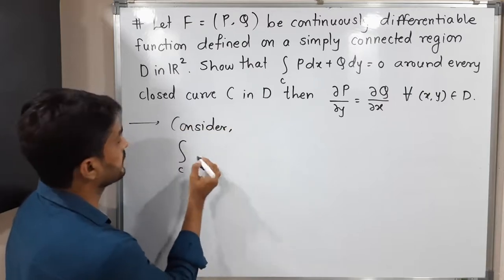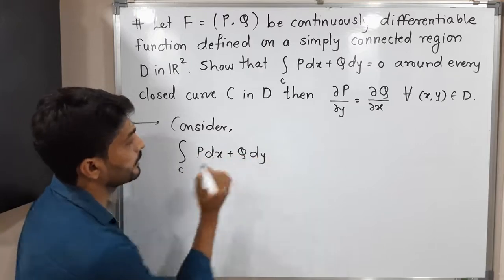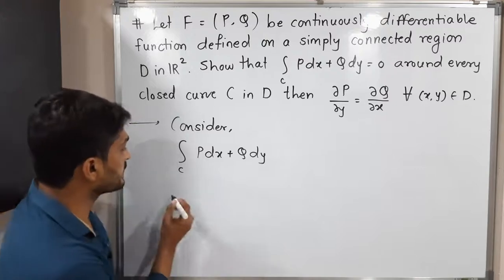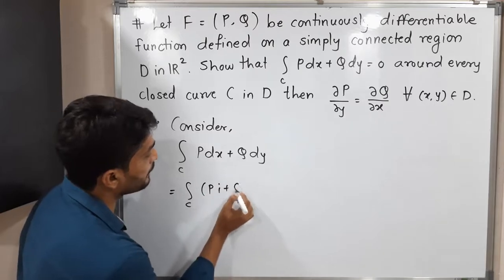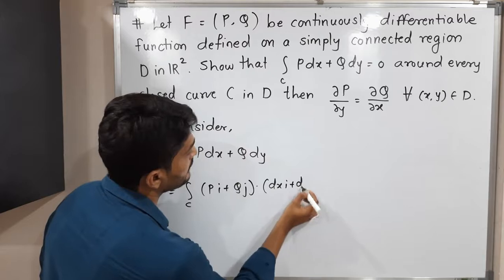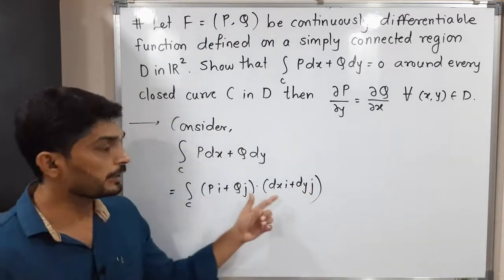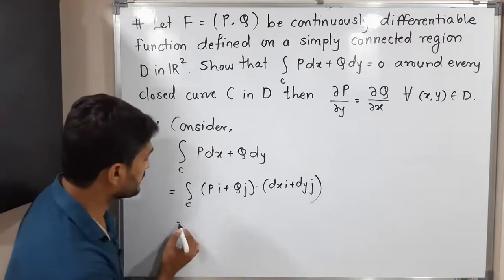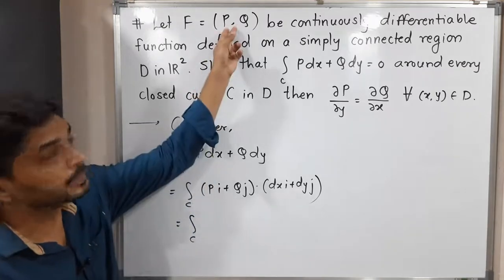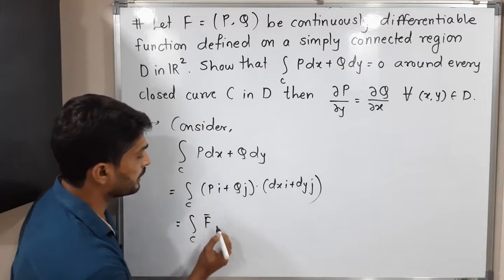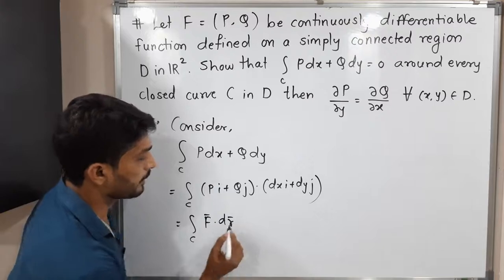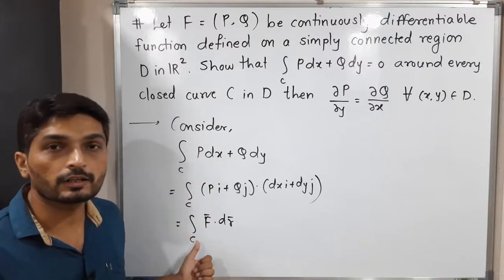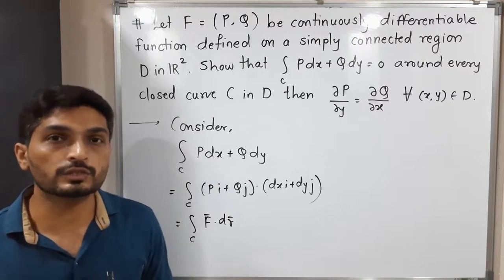Consider the line integral over C: P dx plus Q dy, given to us with value 0. We can express this integral differently — as the integral over C of (P i + Q j) dot (dx i + dy j), which gives us P dx plus Q dy. So this is equal to the line integral over C of F-bar dot dr-bar. The given information tells us this value is always 0 for every closed curve C in D.